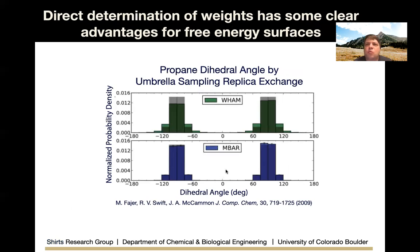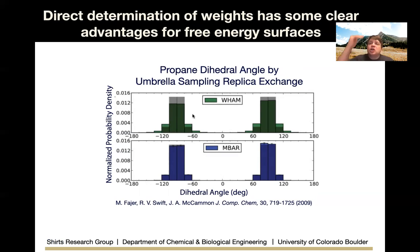As an example, the direct determination of weights has clear advantages for free energy surfaces. Here I have the normalized probability density of a propane dihedral angle from umbrella sampling replica exchange. With relatively coarse bins, if you use WHAM to determine both your weights and bin occupancy, you underweight the barriers — you're smearing out the free energy over the entire barrier and flattening out the peaks. Whereas if you use MBAR for the weights and then use histogramming to combine the probabilities, you get something much more accurate. This was noted by other groups who recognized how much better this approach was.